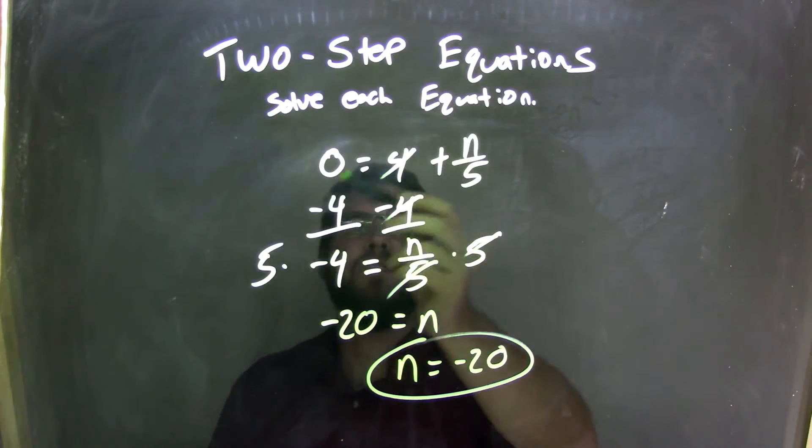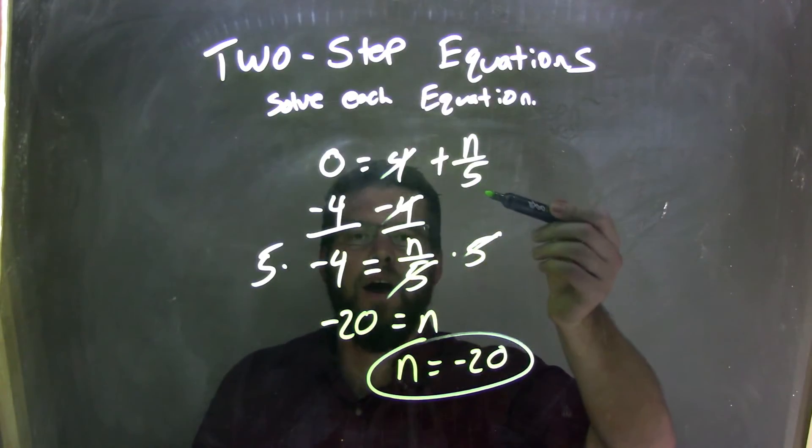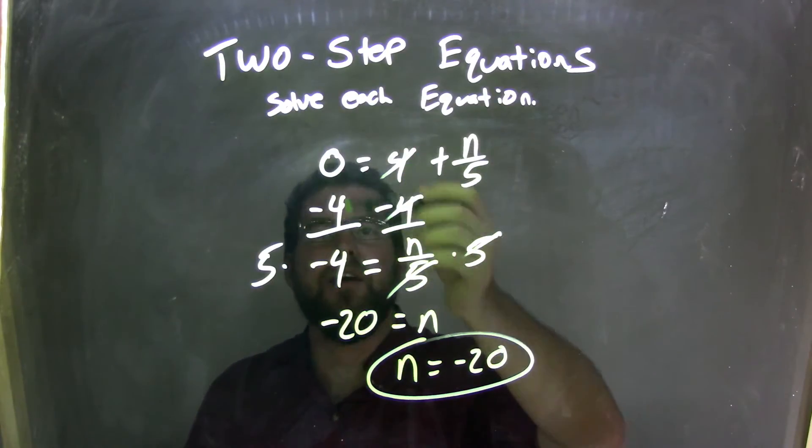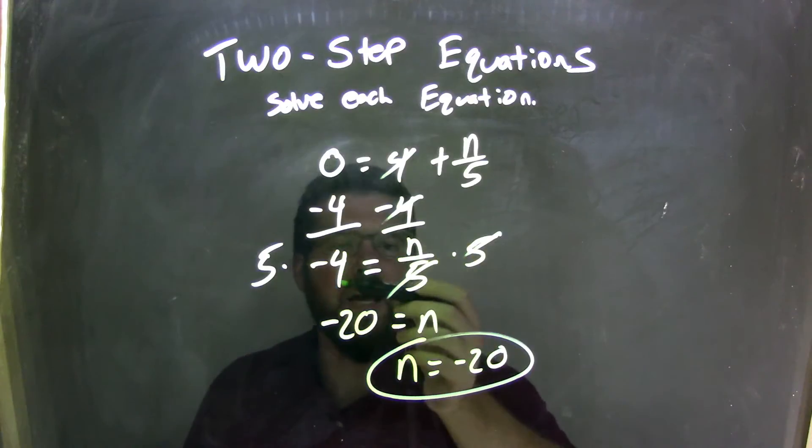So, let's recap. We started with 0 equals 4 plus n over 5. I had a positive 4, and I needed to subtract that 4 from both sides. By doing so, cancel out the 4s here, and I had 0 minus 4, which is negative 4.